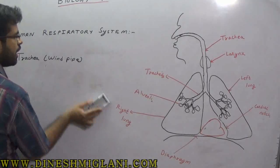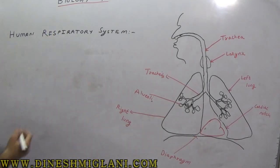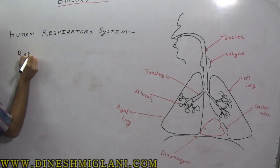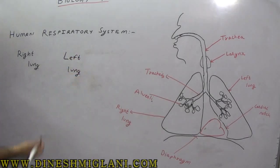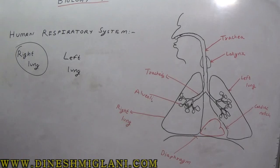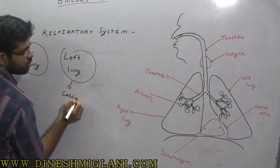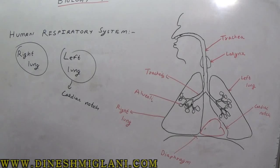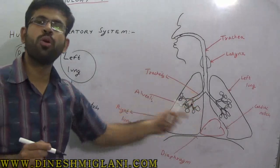Now, talking about the lungs — these are the largest organs of our respiratory system. There is a pair: the right lung and the left lung. As you can see in the diagram, the right lung is slightly bigger than the left lung, because the left lung has a cardiac notch where our heart rests. Each lung is supplied by one tracheat.